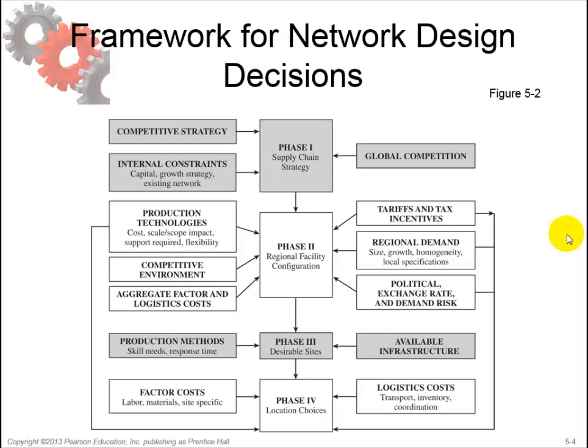The model used for phase 2 is network optimization models — specifically the capacitated plant location model, which we will examine in another video.